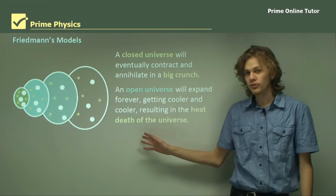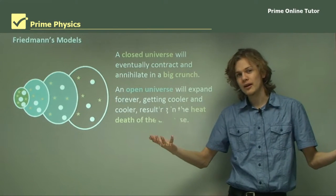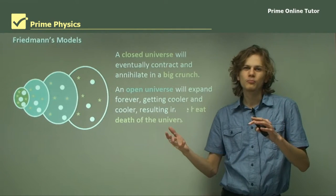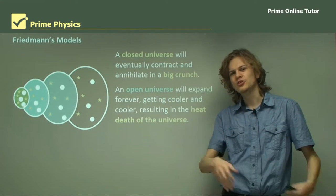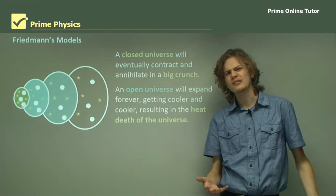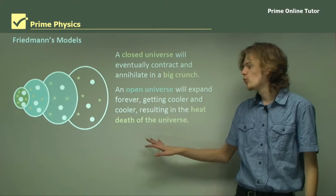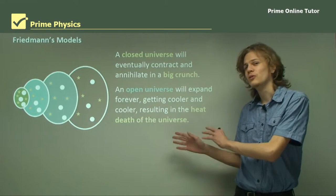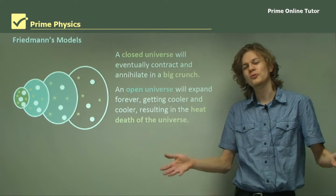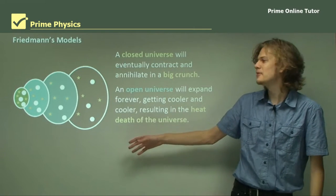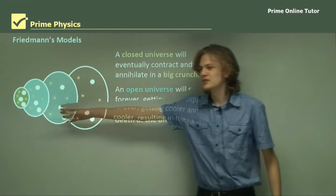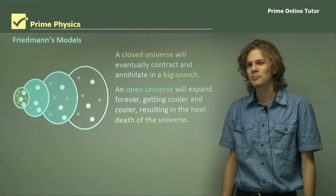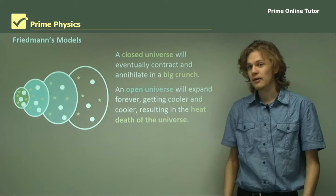An open universe will keep expanding forever and ever and eventually get so big that pretty much all light and heat in the universe is so spread out that everything's getting cold and dark. So that's called the heat death of the universe because there's no heat left. It sounds like it might involve a lot of heat, but in fact it doesn't. It involves all the heat going away. In this diagram here, the universe just keeps expanding and expanding and getting colder and darker until eventually they're all very separated.